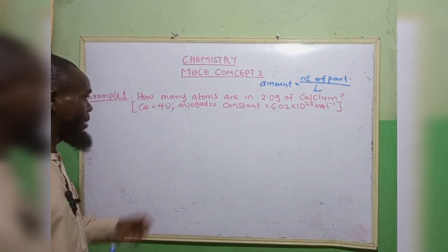From here, we want to calculate the number of particles, and we are given the molar mass. The molar mass of calcium is 40 grams per mole, while Avogadro's constant is 6.02 times 10 to the power of 23. Since we have mass and molar mass, the first formula that comes to mind is: amount equals to mass over molar mass. Secondly, since we need the number of particles and we have Avogadro's constant, the next formula is: amount equals to number of particles over Avogadro's constant.